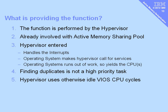The hypervisor has plenty of opportunities to do its work for deduplication — it handles all the interrupts, gets called when operating systems want a service, and when an operating system runs out of work it yields the processor back to the hypervisor. Finding these duplicates is not a high-priority task. The hypervisor uses otherwise idle CPU cycles in the VIO server, meaning we get the optimization of deduplication practically for free. If our machine gets very busy, it can step back and get on with the real work of the real applications.